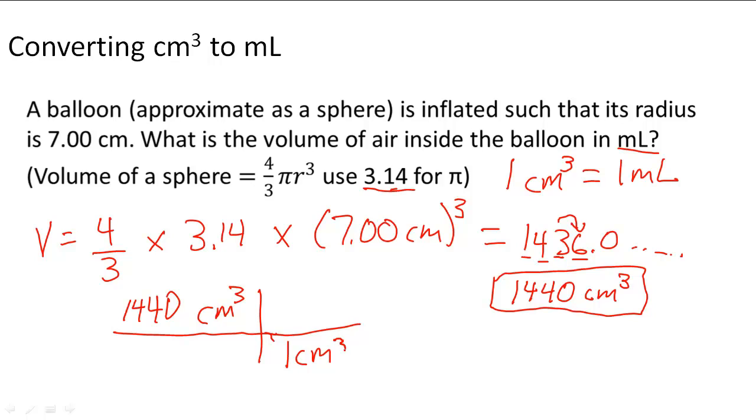1 centimeter cubed equals 1 milliliter. So we're going to multiply across the top: 1, 4, 4, 0 times 1 milliliter. And then we cancel out the units. And we see that all the units that are left are milliliters, which we know that's what we want.